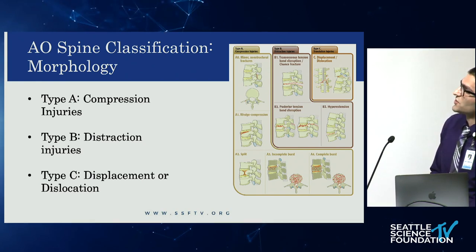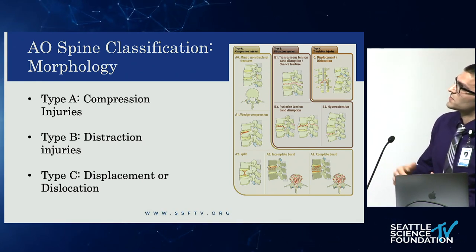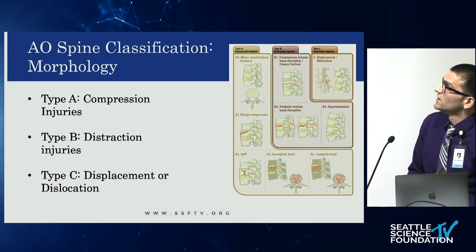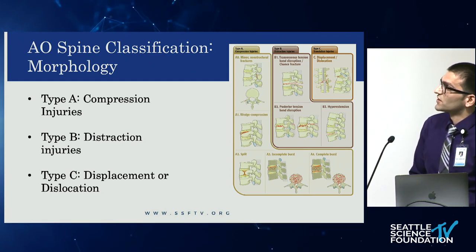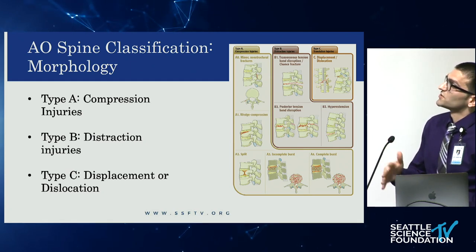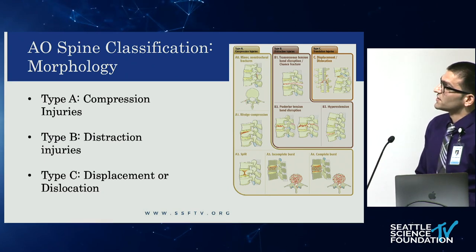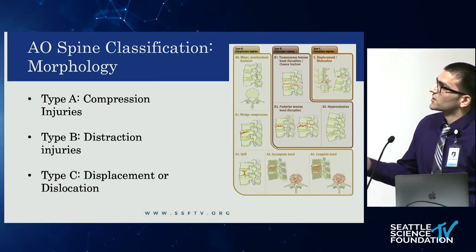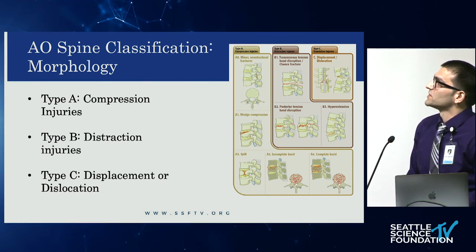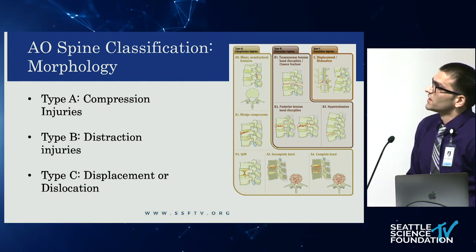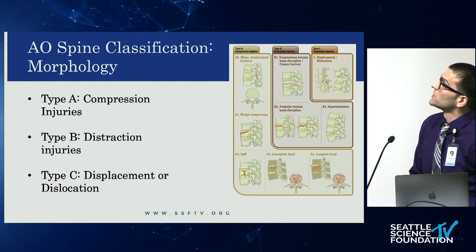With distraction injuries, there is disruption of the posterior ligament-disc complex. B1 is your Chance fracture. B2 is your flexion-distraction injury, where the anterior column fails under compression and the posterior column fails under tension. B3 is your hyperextension injury with disruption of the anterior longitudinal ligament.